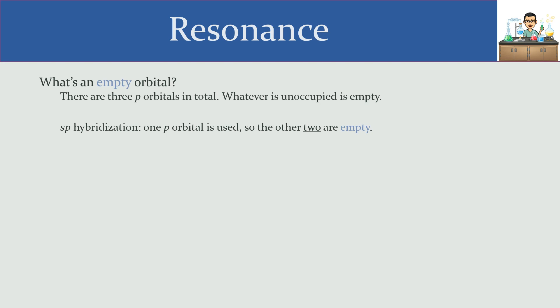An sp hybridized atom uses an s orbital and a p orbital to accommodate its electrons. With sp hybridization, that means we have one p orbital that's getting used, and the other two out of the three p orbitals are empty. The fact that we have two empty orbitals means that resonance is a possibility.